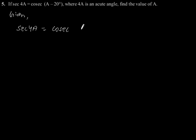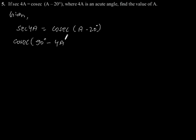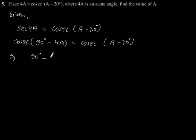This can be written as cosec(90 degrees minus 4a) is equal to cosec(a minus 20 degrees). So this implies 90 degrees minus 4a is equal to a minus 20 degrees.